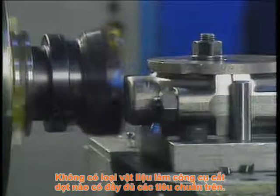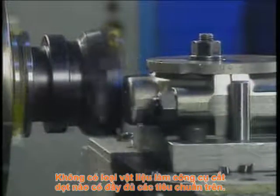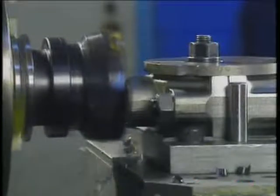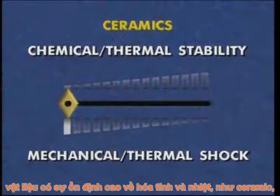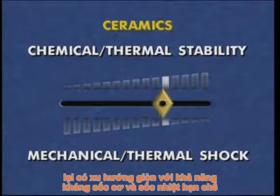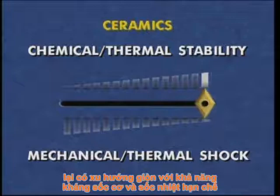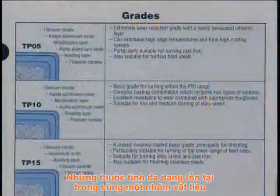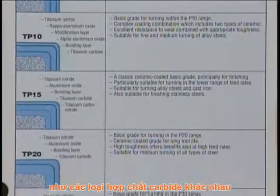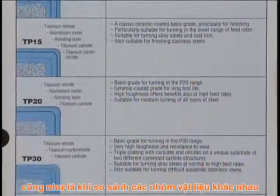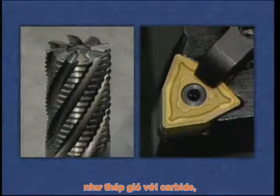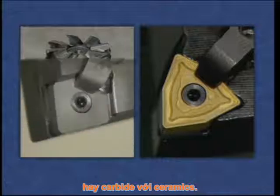No single cutting tool material incorporates all these qualities. Instead, trade-offs occur among the various tool materials. For example, materials with excellent chemical and thermal stability, such as ceramics, tend to be brittle with limited resistance to mechanical and thermal shock. These variable properties take place both within a material class, such as different grades of carbide, as well as when comparing different classes of tool materials, such as high-speed steel and carbide, or carbide and ceramics.